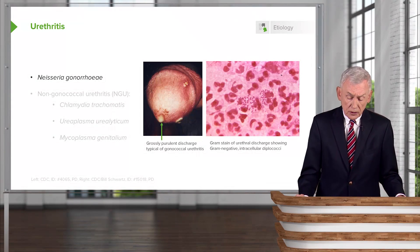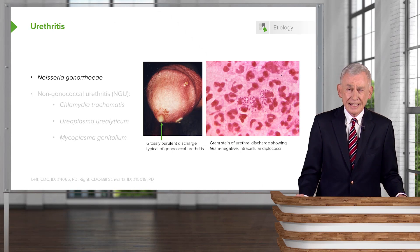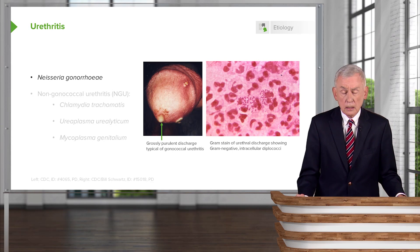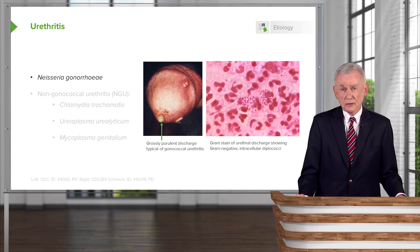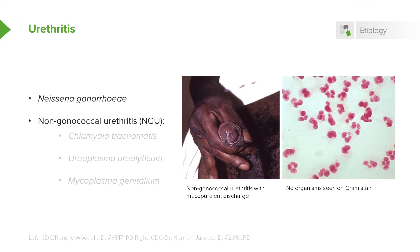Neisseria gonorrhoeae causes a grossly purulent type of discharge from the urethra, and it is very painful upon urination. If you were to gram stain this discharge, you would find the classic gram-negative intracellular diplococci. On the other hand, non-gonococcal urethritis is not nearly so purulent — it may even be a clear discharge.